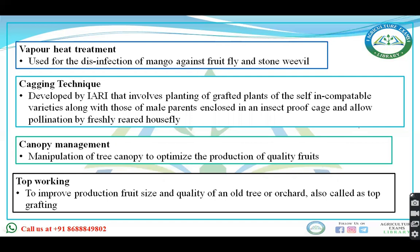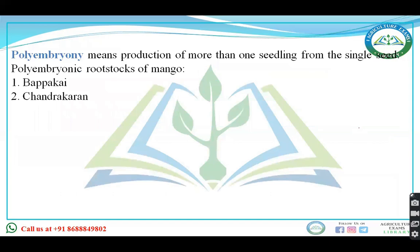Top working is done to improve the production, fruit size, and quality of an old tree, and is mainly practiced in orchards.